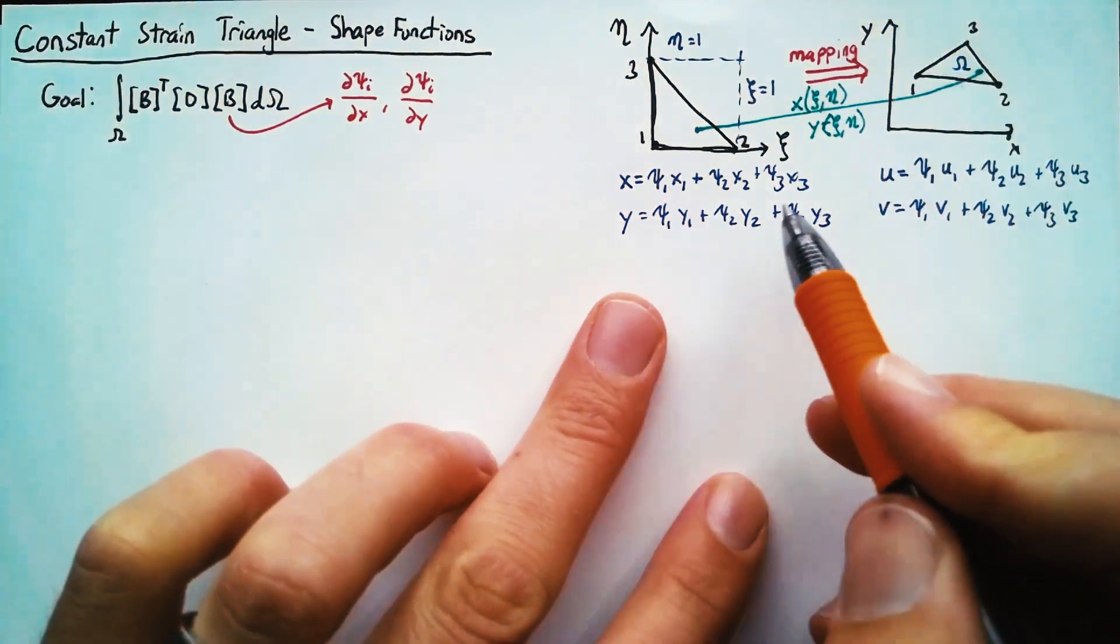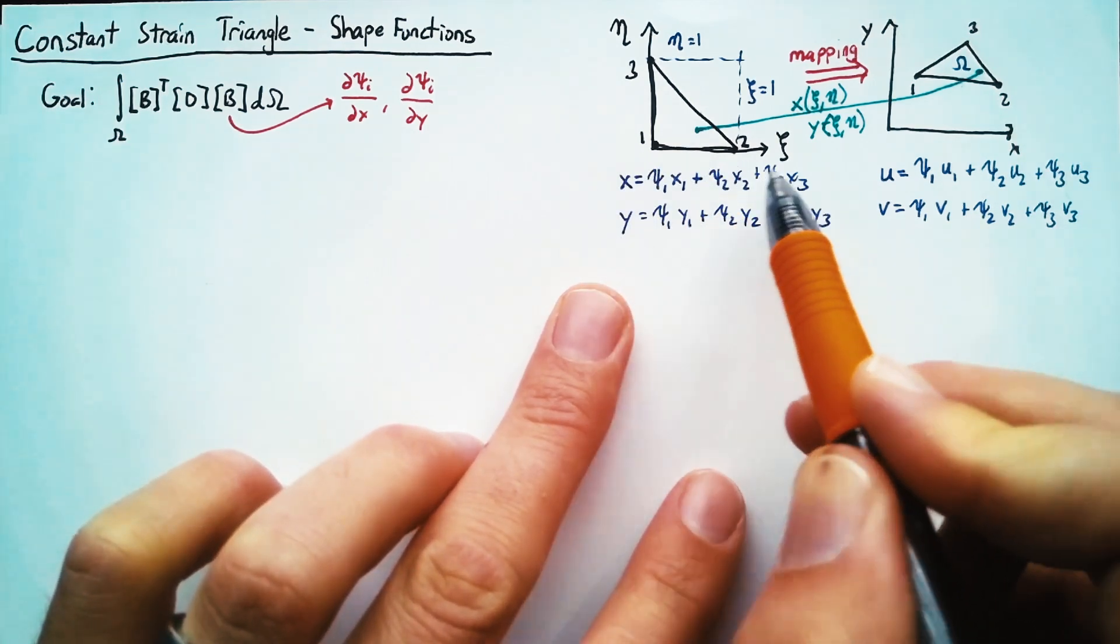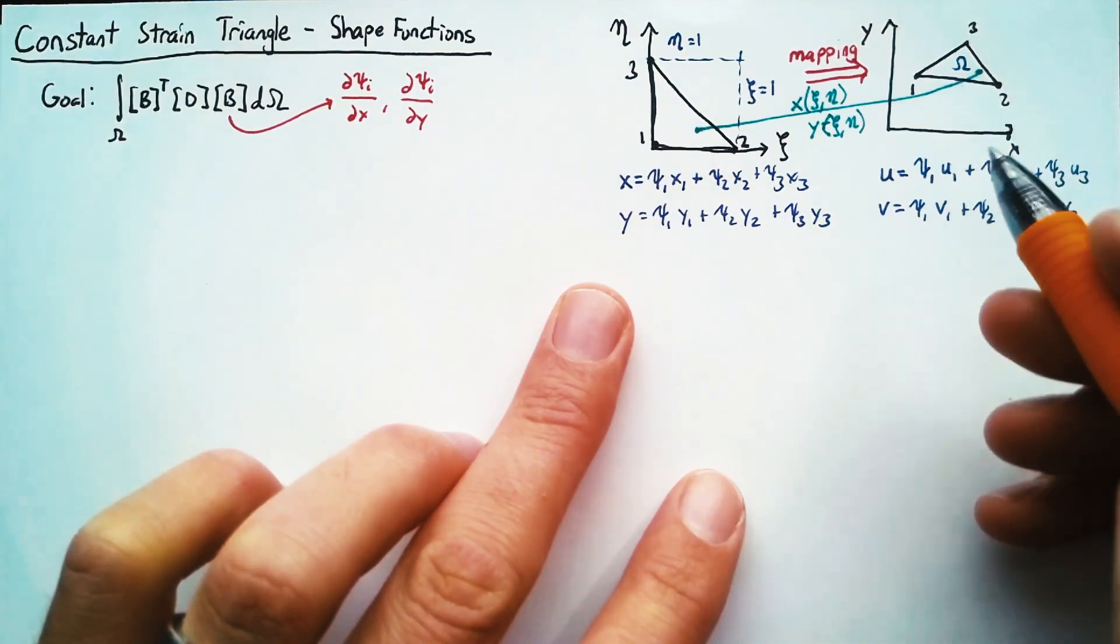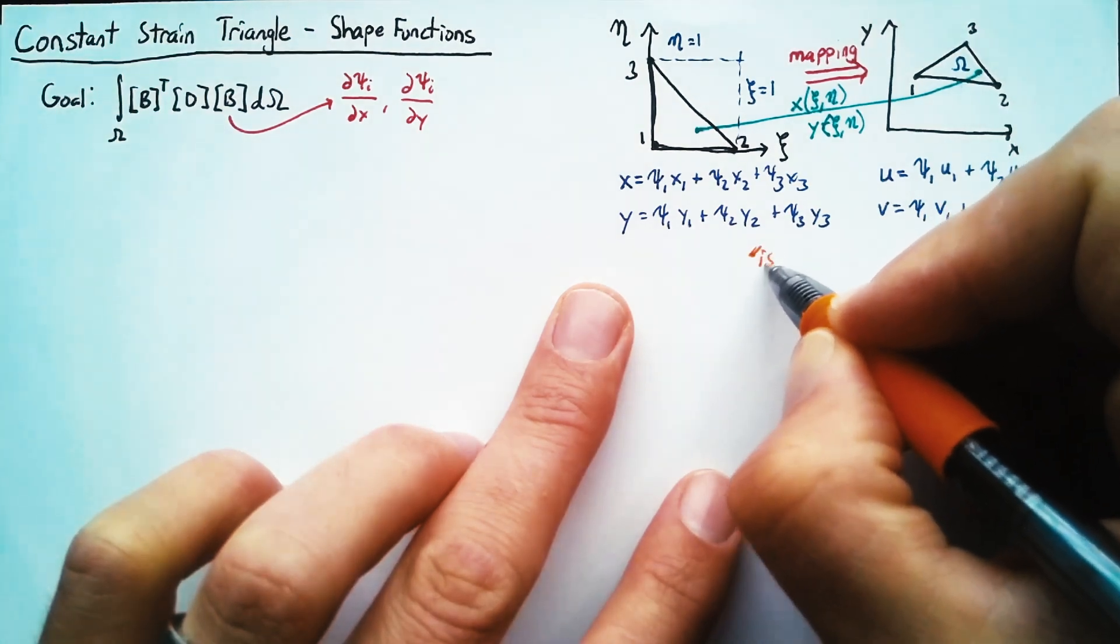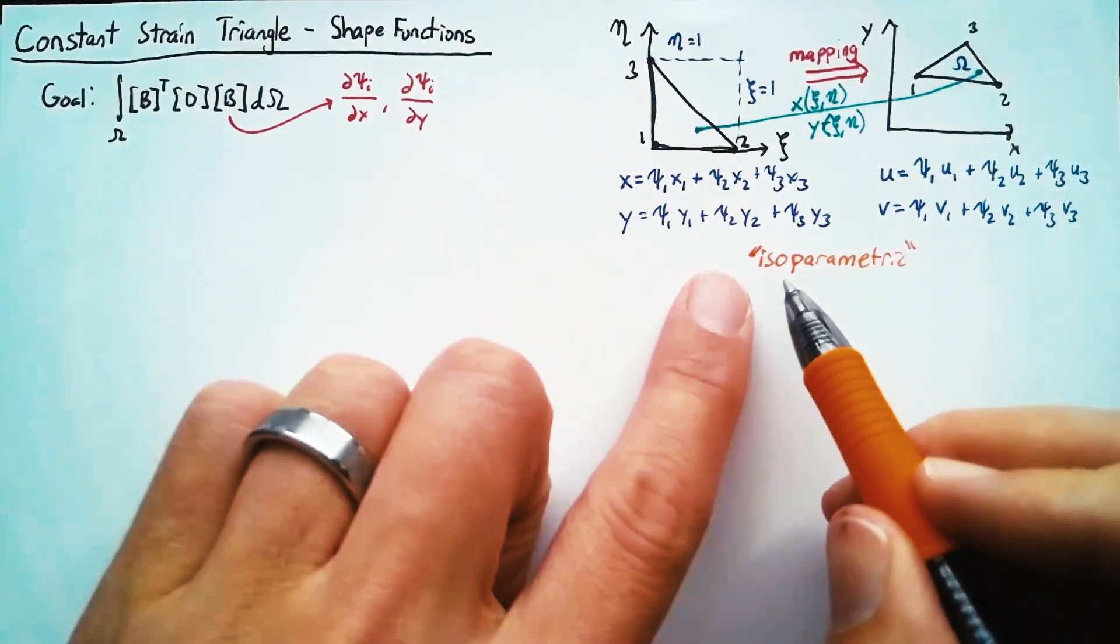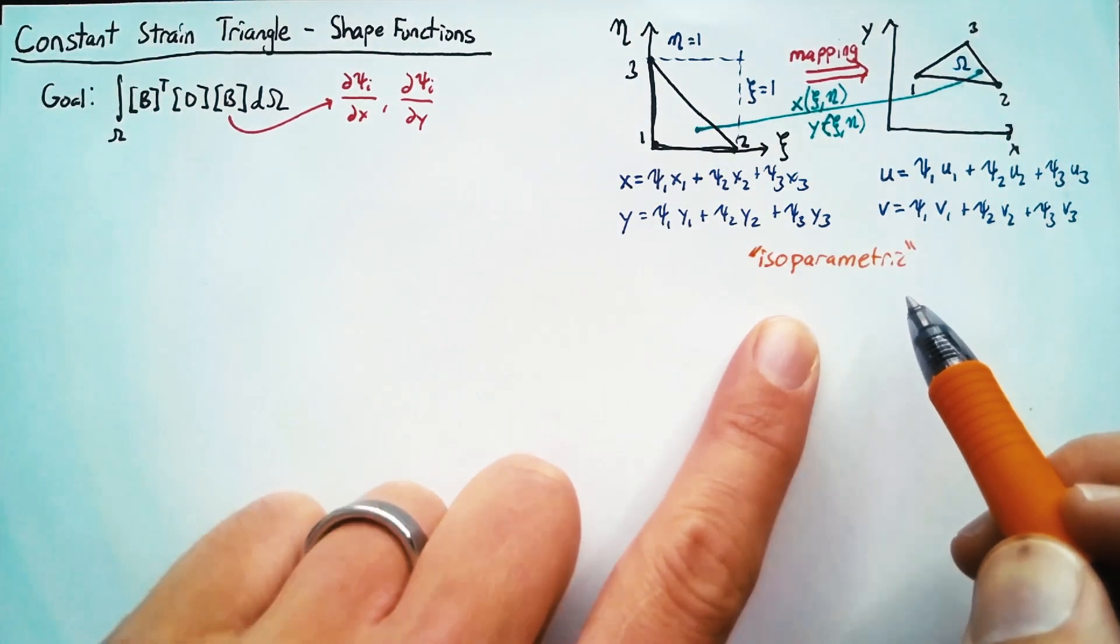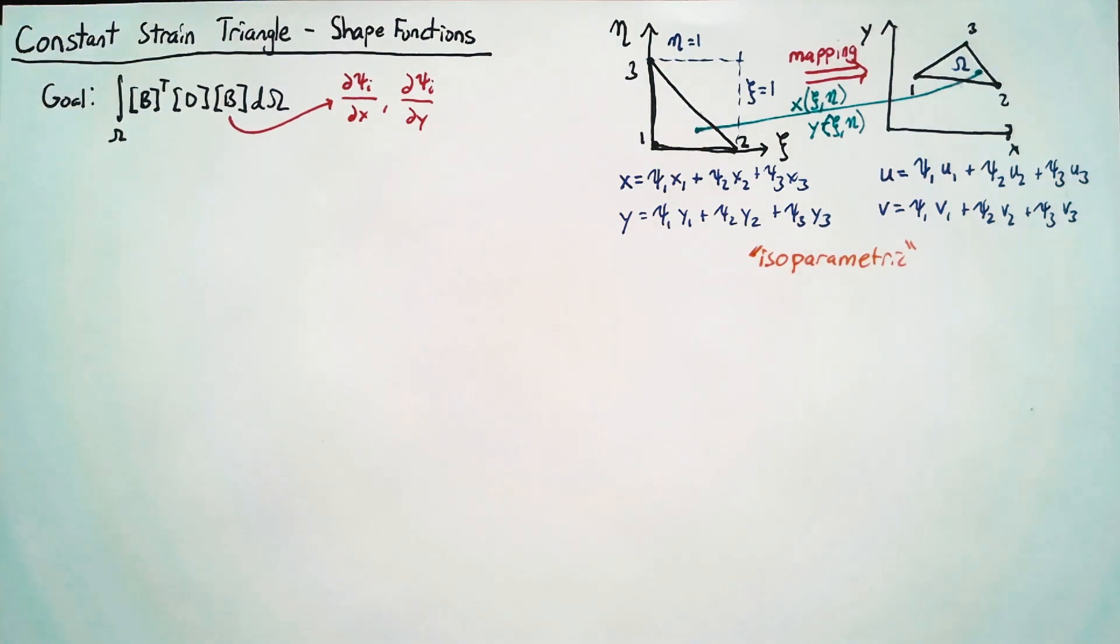Now, using the same shape functions for both our nodal locations and displacements has a special name. We call that an isoparametric formulation. ISO here just means same, and parametric comes from the word parameter. So we're using the same parameters to describe both our positions and our displacements.